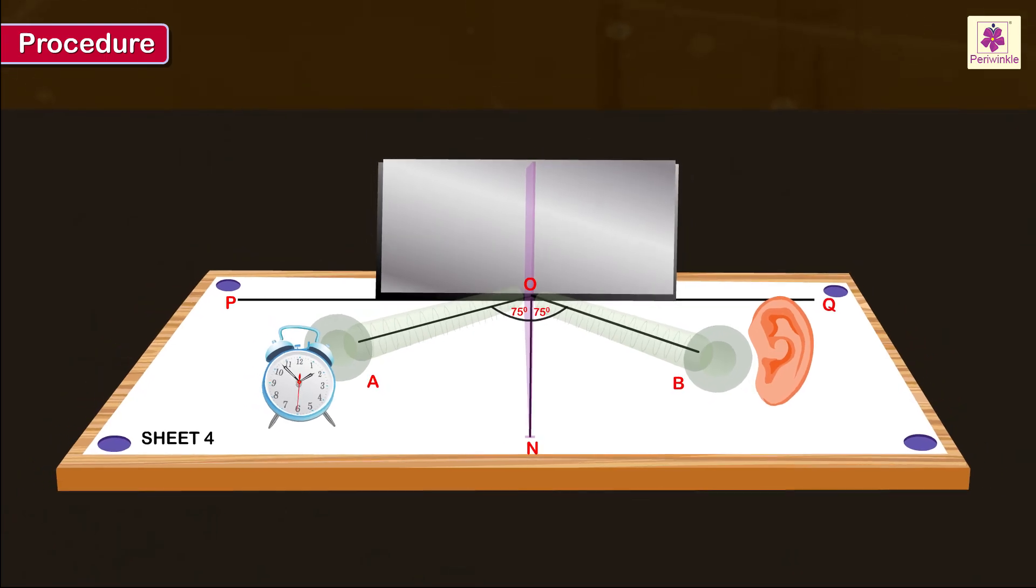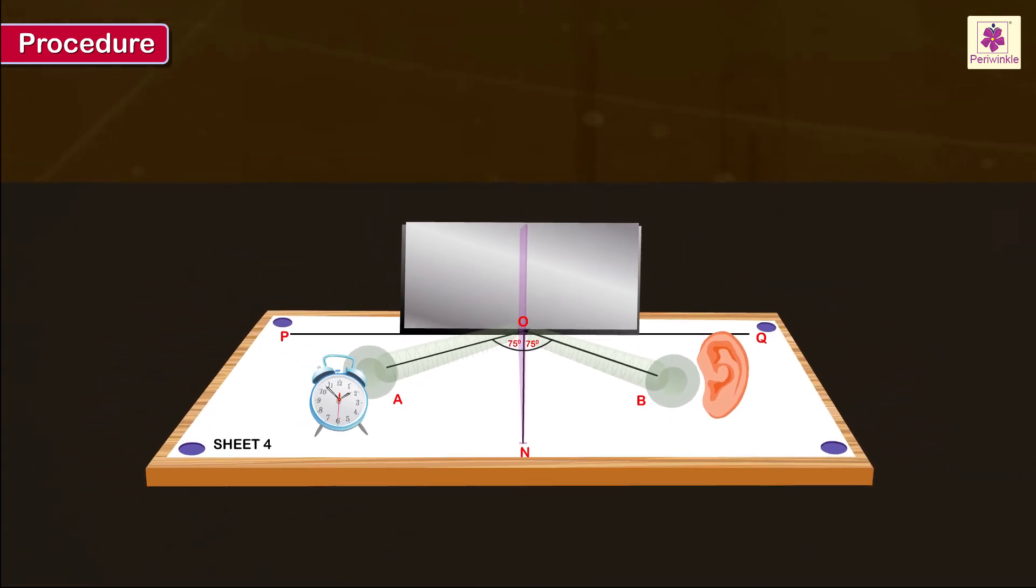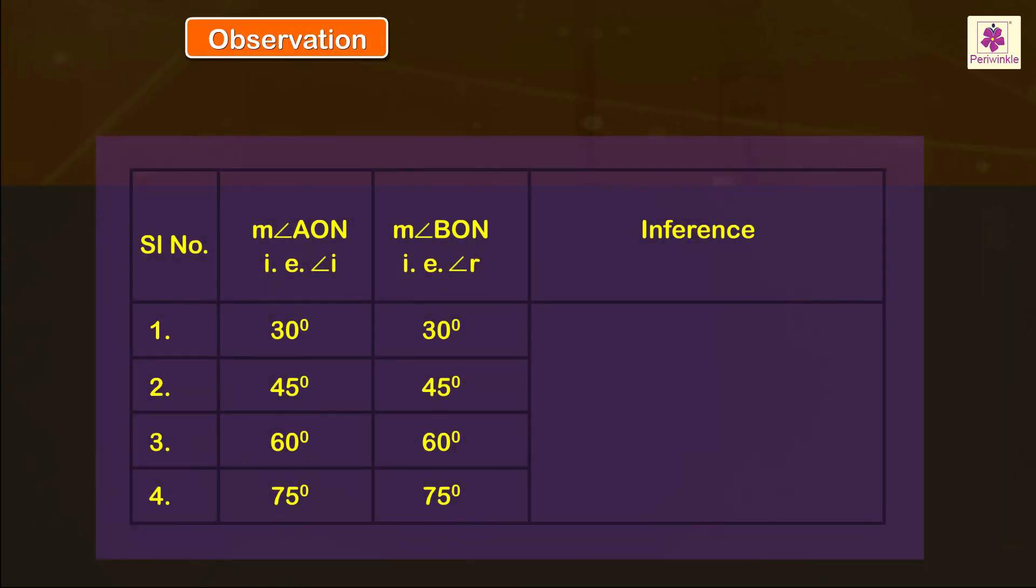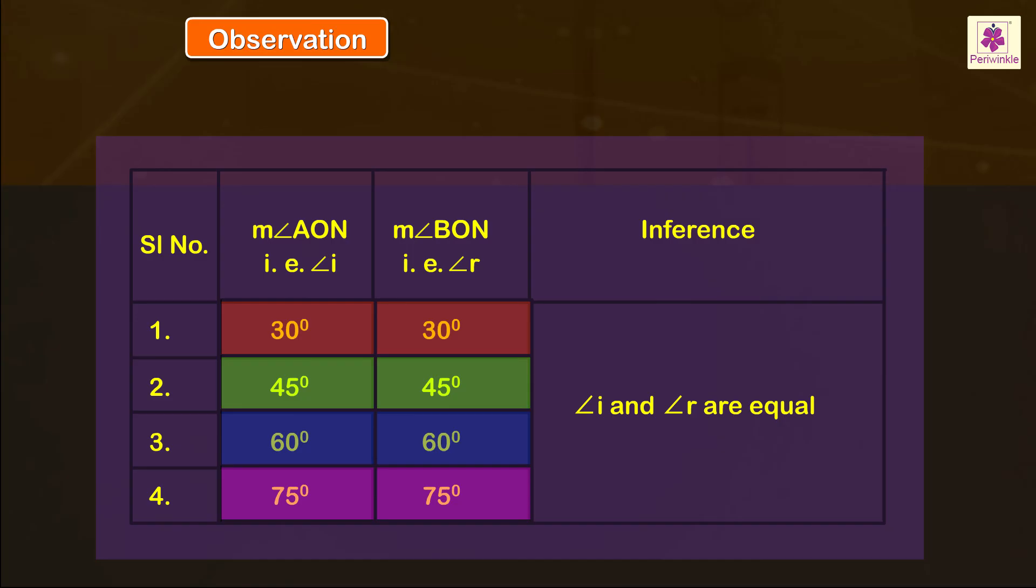Tabulate the observations and inferences. Observation: We observe that angle AON and angle BON are equal for all the experiments. Inference: The angle of incidence of sound is equal to the angle of reflection of sound.